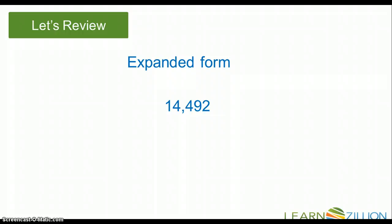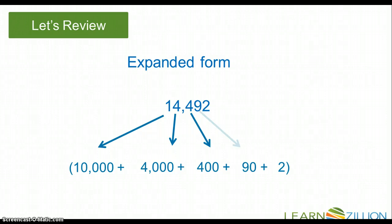So in the number 14,492, we can break it down by 10,000 plus 4,000 plus 400 plus 90 plus 2. And those are our values. So that 1 in the 10,000s place is worth 10,000. That 4 in the 1,000s place is worth 4,000. The 4 in the 100s place is worth 400. The 9 in the 10s place is worth 90. And that 2 in the 1s place is worth 2.